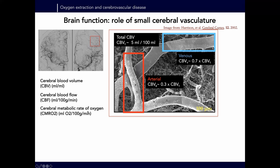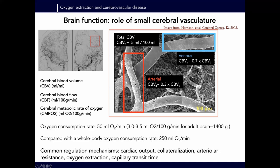The cerebral metabolic rate of oxygen is generally about 50 mL of oxygen per minute — about 20–25% of the whole body. As a rate, it's generally between 3 to 3.5 mL of oxygen per 100 grams of tissue per minute. Going much below that leads to cognitive impairment. This is the typical expected range based largely on the historical PET literature.